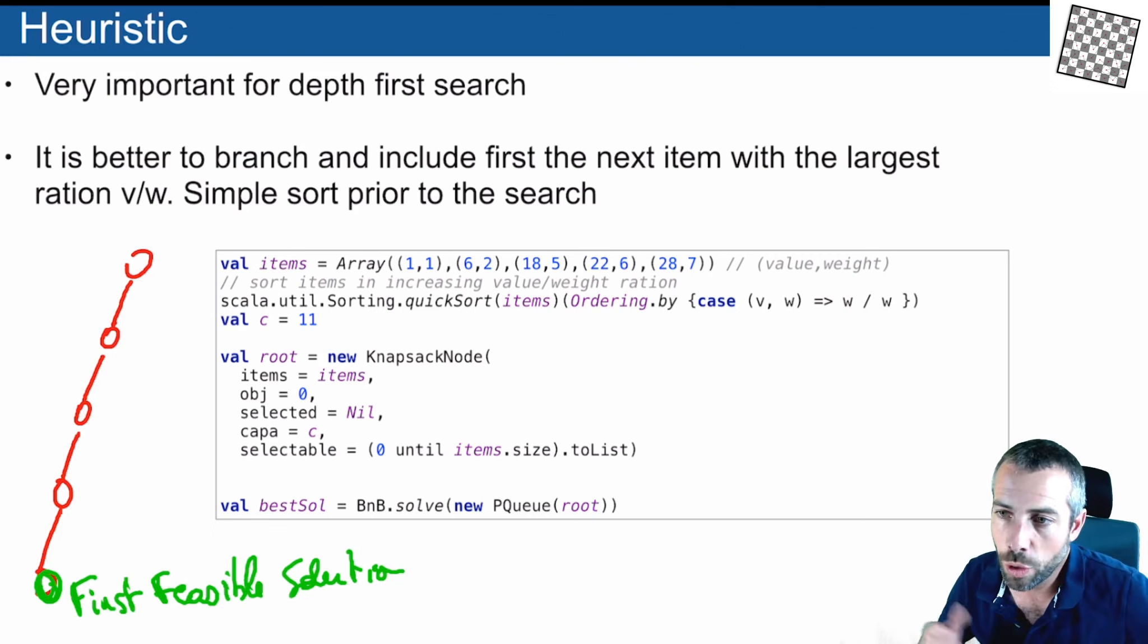As you know, the depth-first search will always expand the latest node that is added on top of the stack, and so it's important to make this first solution a good one. You want to have a first solution that has a good objective function, because if you don't have that, the pruning that you will get with depth-first search will be very bad.